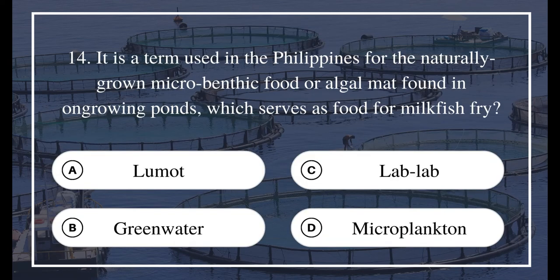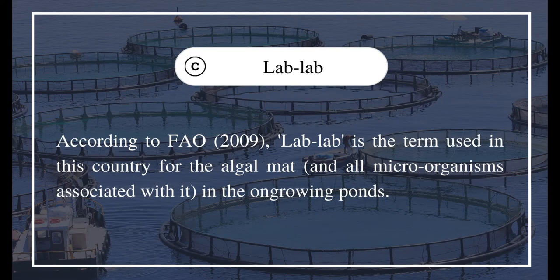Question 14: It is a term used in the Philippines for the naturally grown microbenthic food or algal mat found in on-growing ponds, which serves as food for milkfish fry. A) limit, B) green water, C) lab-lab, D) microplankton. The answer is C) lab-lab. According to FAO 2009, lab-lab is the term used in this country for the algal mat and all microorganisms associated with it in the on-growing ponds.